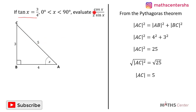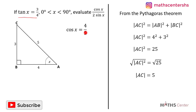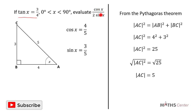We can now find both cos x and sin x. Cos is adjacent divided by hypotenuse, so cos x equals 4 divided by 5. Sin is opposite divided by hypotenuse, so sin x equals 3 divided by 5.